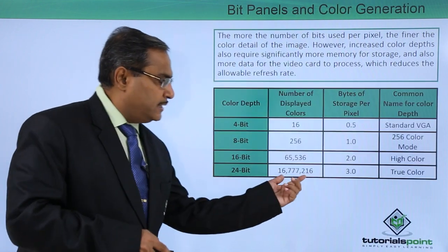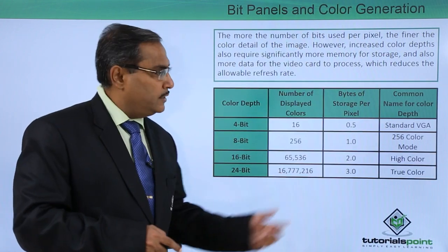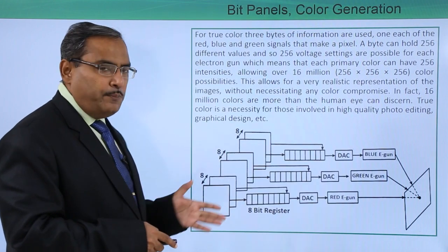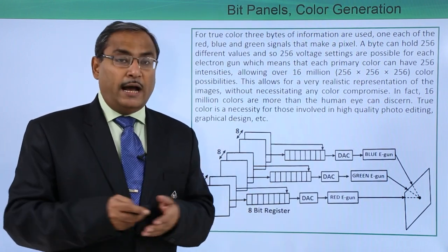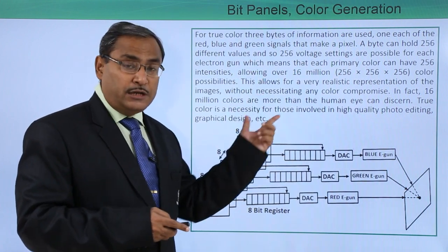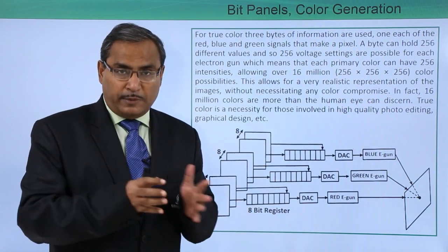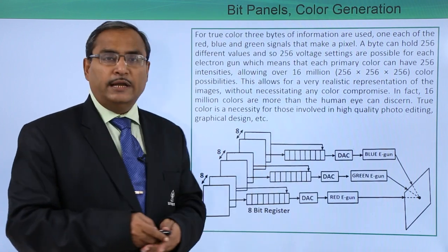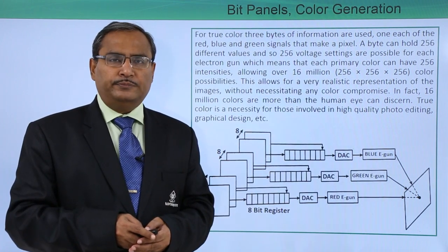Now we see we have 16 million colors, which we calculated earlier. In this way we have discussed bit planes, color depth, bit depth, and the respective color generations possible, along with the mathematics behind it. Thanks for watching this video.